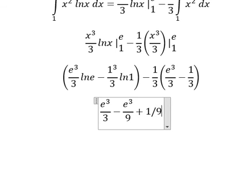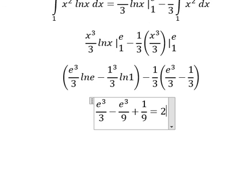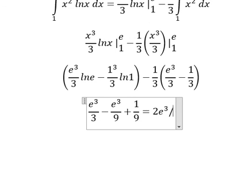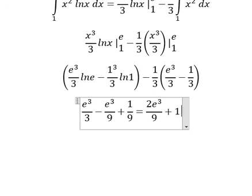The last term is 1/9. Simplifying, we have the final answer: 2e³ over 9 plus 1/9.